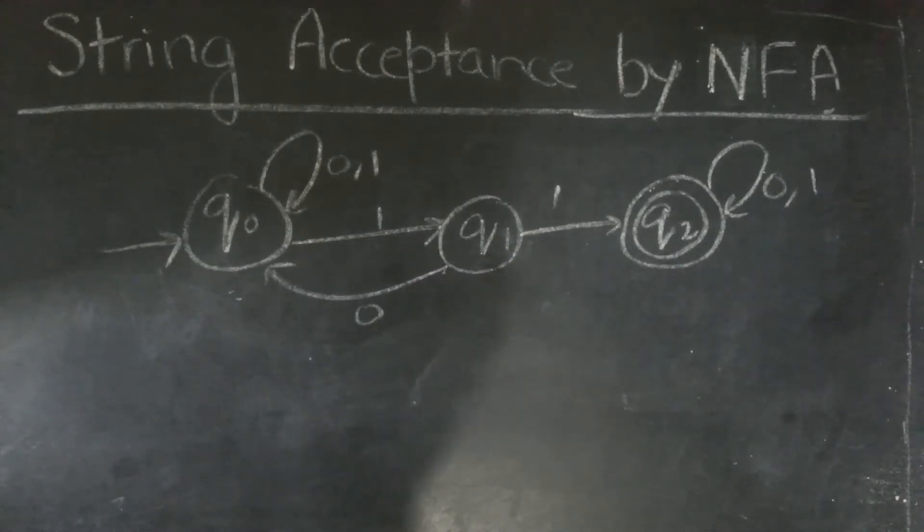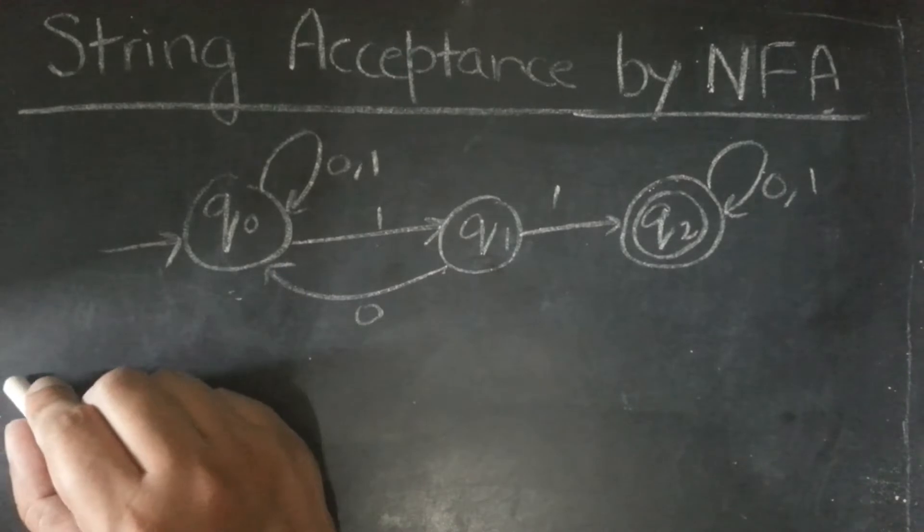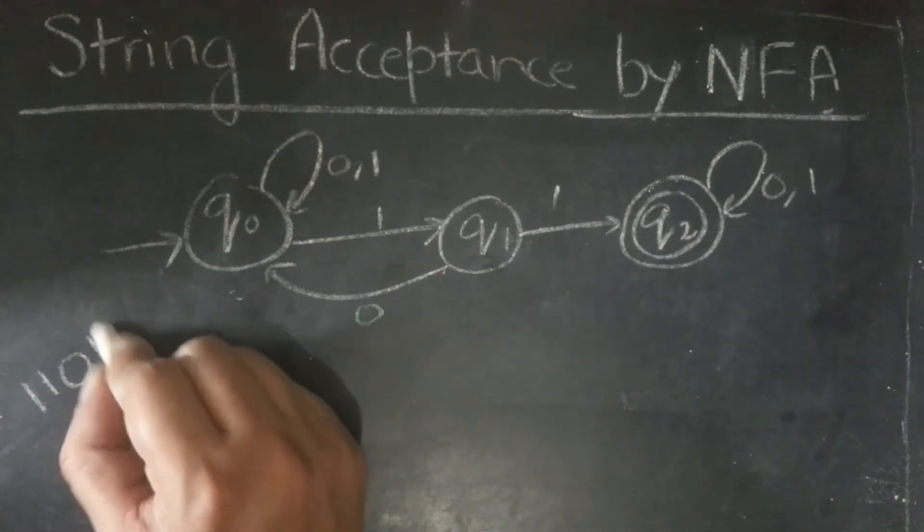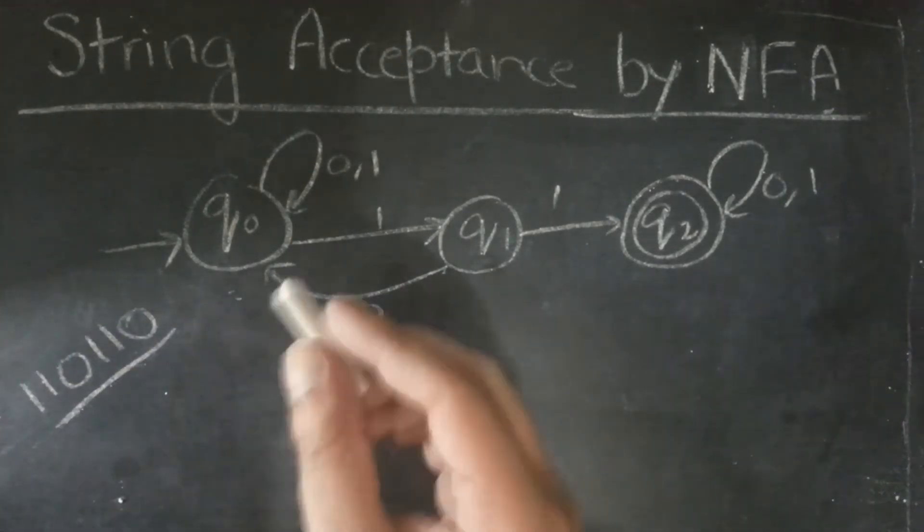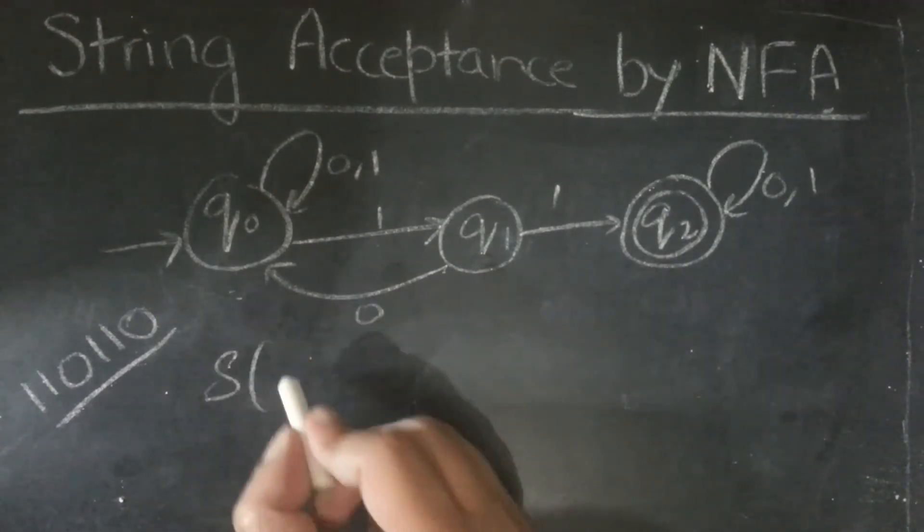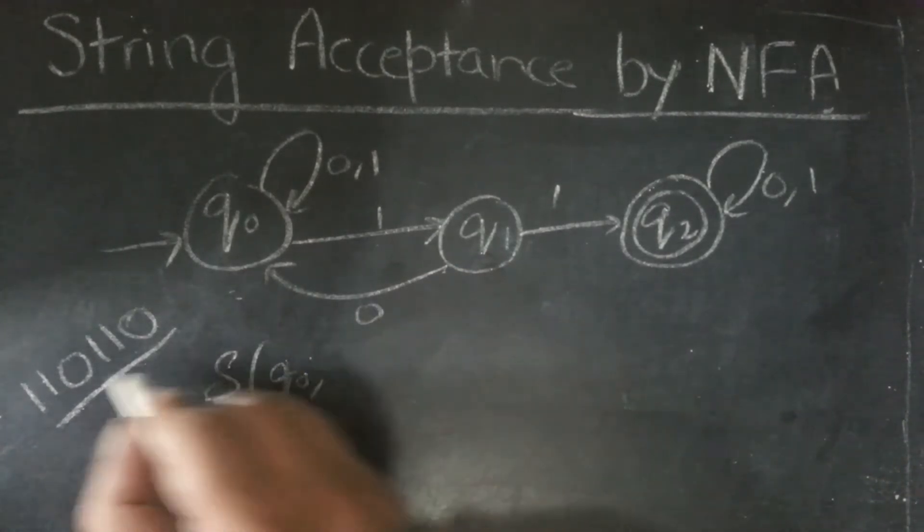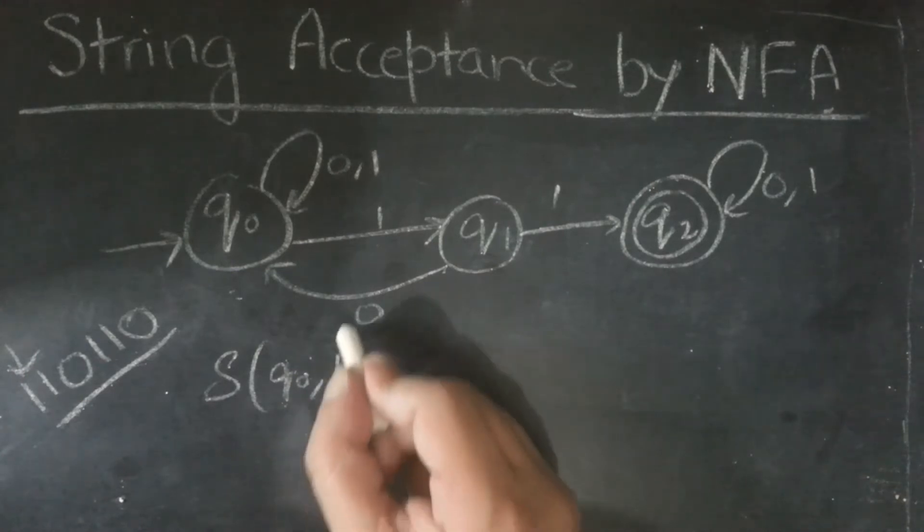Let's see another example. This time, the string to be accepted is 110110. So, similarly, on initial state q0, we will give the first, which is 1. It will take us to both q0 and q1.